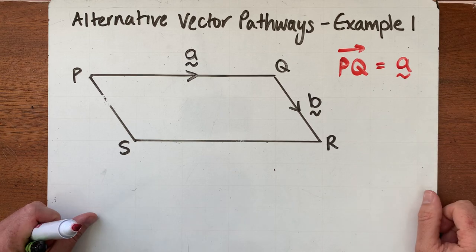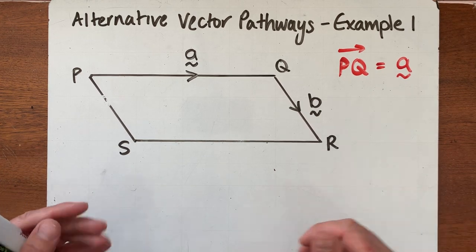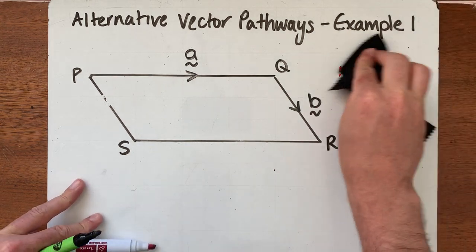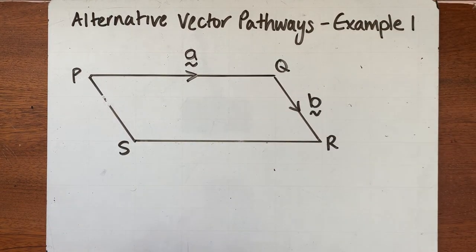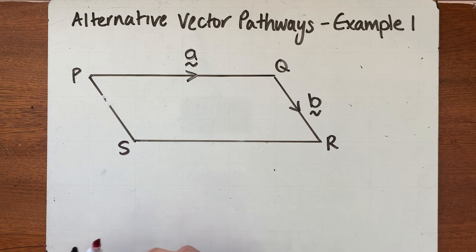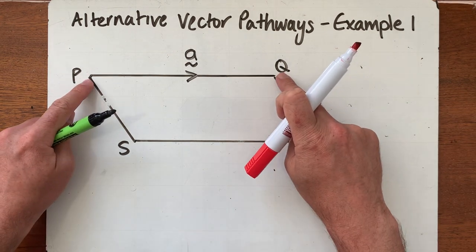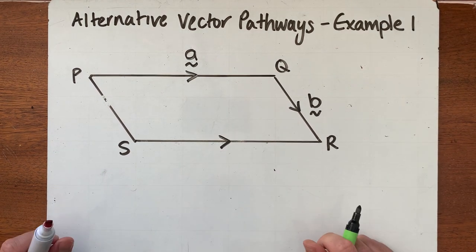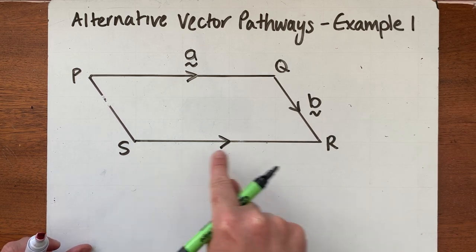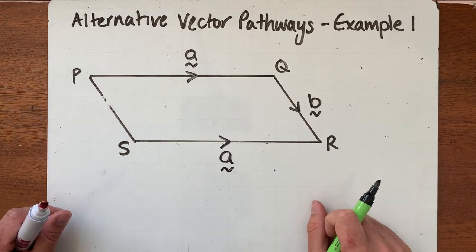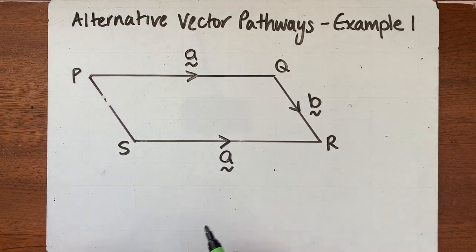One of the main things we have to get our head around is that any vector that is the same size and travels in the same direction as another vector can be called the same thing. Looking at our diagram, we can see that PQ and SR represent the same vector — they are the same length and travel in the same direction. So if I want to go along SR in that direction, I can also call SR vector 'a'.